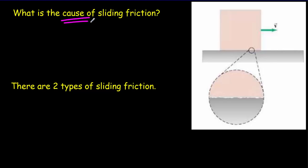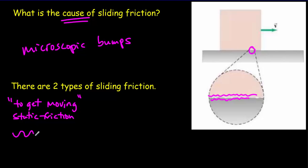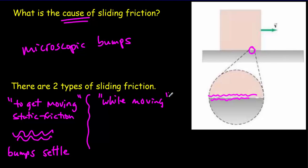So what is the cause of sliding friction? If we magnify the area between the two surfaces, there would be microscopic bumps along the surfaces, and those microscopic bumps would settle into one another — that would produce friction. This leads to two different types of sliding friction: one to get the object moving, which we call static friction, because the bumps settle into one another; and the other type, while the object is moving, which we call kinetic friction.